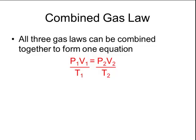So P1, V1, and T1 mean the pressure, volume, and temperature before I change anything. And P2, V2, and T2 represent those values after the change occurs.